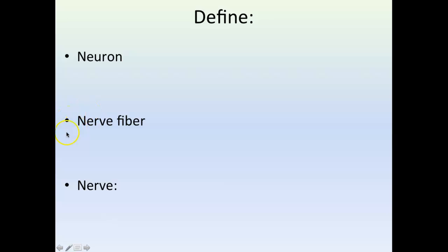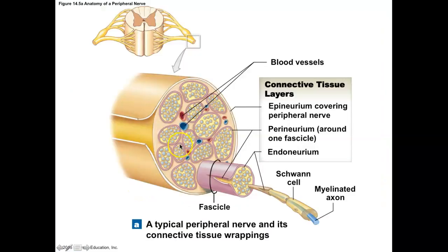Can you tell the difference between these words: neuron, nerve fiber, and nerve? A neuron is everything — it's one cell: the dendrites, the soma, the long axon of the cell. A fiber is just the long axon of the cell — one fiber is one axon. A nerve is a bundle of axons running together, organized by connective tissue into fascicles with blood supply. A nerve is a very large object — you can see nerves with your eye. Nerves have names, like the sciatic nerve and the median nerve.